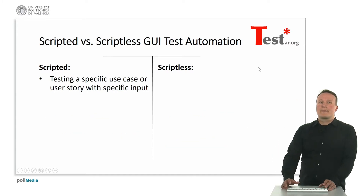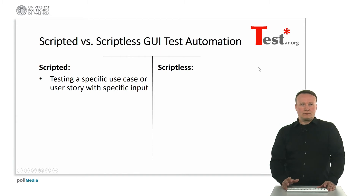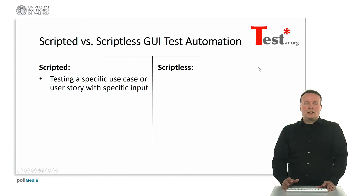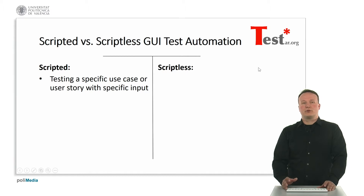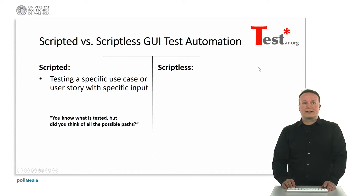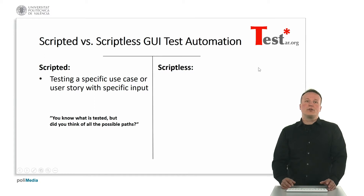In scripted testing you're testing a specific use case or user story with a very specific input. For example, in scripted testing you usually know what is tested, but did you actually think of all the possible paths?